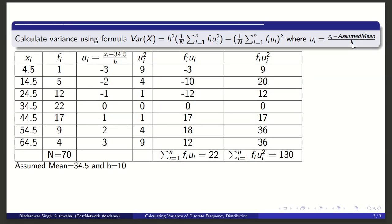Thereafter, if you see the formula: h is 10, 1/n where n is 70, and Σ(fi·ui²) we have calculated - that is 130.